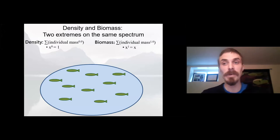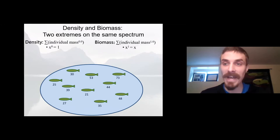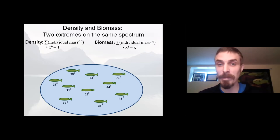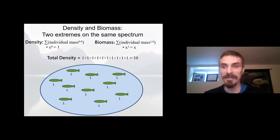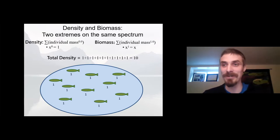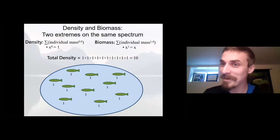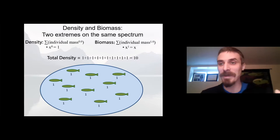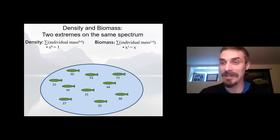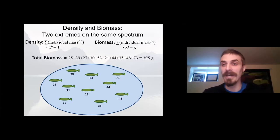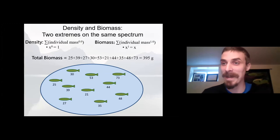You can actually express density and biomass as two extremes on the same mathematical spectrum. Density can be expressed as a sum of individual mass values raised to the power of zero — because any number raised to the power of zero equals one. So in a hypothetical lake, we take all those fish, raise their individual mass values to the power of zero, sum the resulting ones, and in a very roundabout way estimate density. Similarly, we can estimate biomass by taking the sum of individual mass values raised to the power of one — because any number raised to the power of one equals itself.